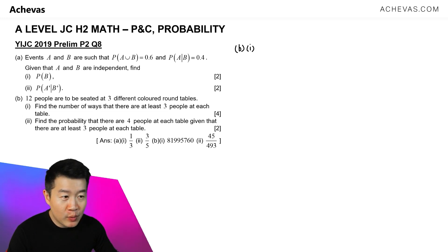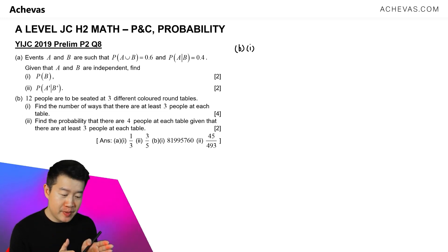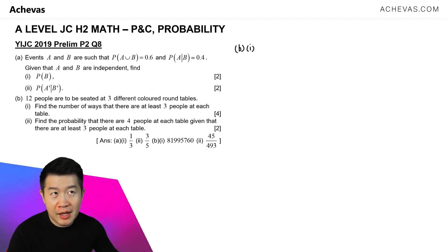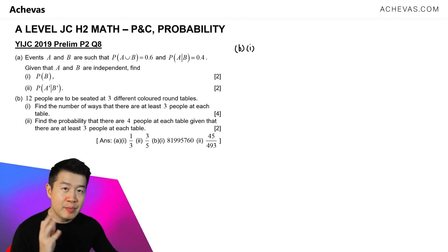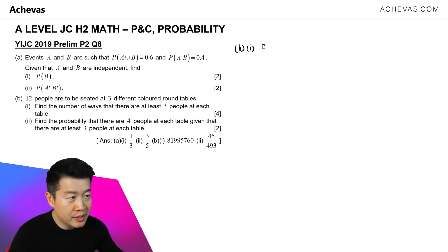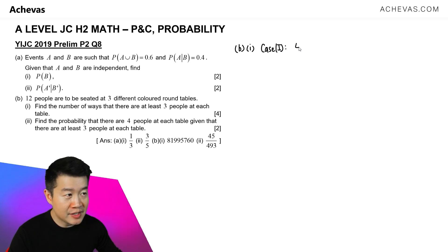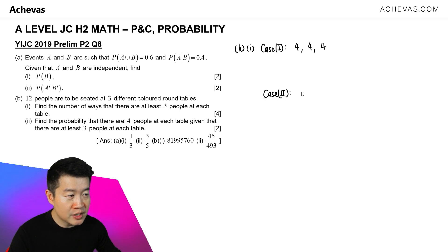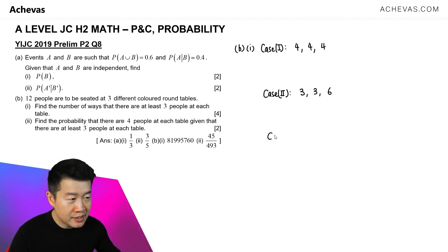We are supposed to calculate the number of ways such that there are at least 3 people out of 12 people assigned to 3 different colored tables. There are 3 possible scenarios. Case 1: the first table has 4 people, the second table has 4 people, and the last one also has 4 people. Case 2: one of the tables has 3 people, another has 3, and the last one has 6 people.